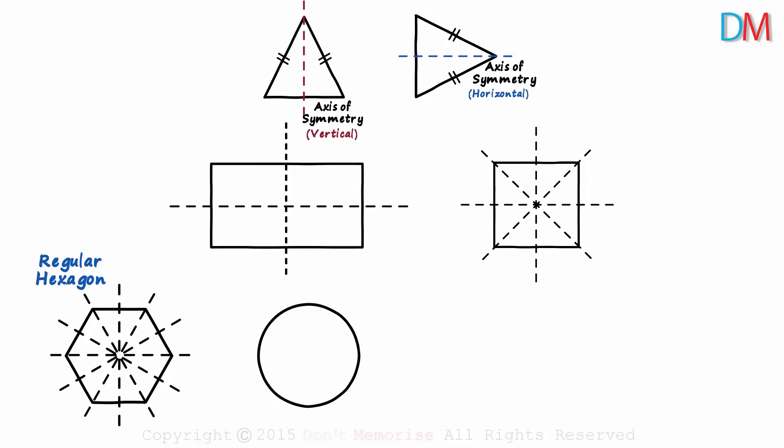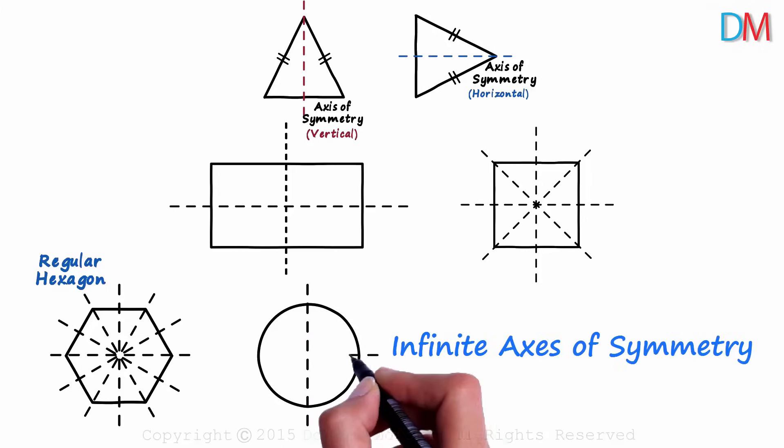And a circle on the other hand, has infinite axes of symmetry. No matter how we draw the line passing through the center, the two parts formed will always fold perfectly along that line.